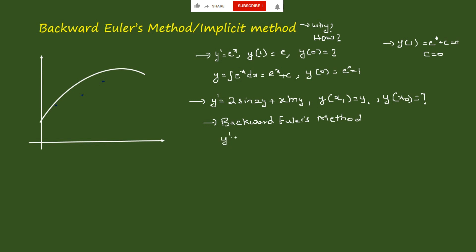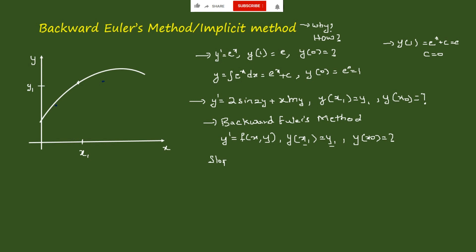They will give you an equation y' = f(x, y), and say y(x1) = y1, asking the value of y(x0). Consider the values x1 and y1. Looking at a graph with x-axis and y-axis, assume the function looks a certain way. We know x1 and y1, so mark those values on the graph. Since we know y', we can find the slope, which equals f(x1, y1), and draw a straight line through that point.